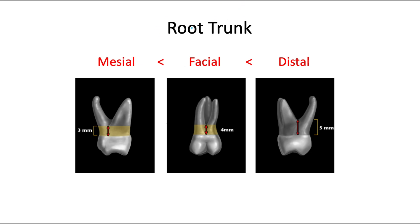The root trunk — the area from the cervical line to the furcation — measures approximately 3mm on the mesial surface, 4mm on the facial, and 5mm on the distal. So the mesial furcation is closest to the CEJ and the distal furcation is furthest away, meaning the root trunk gets longer as you move distally.